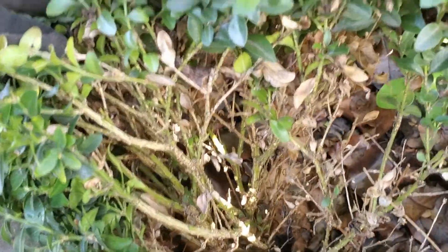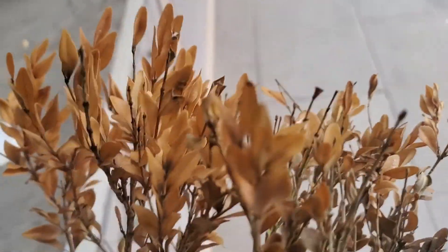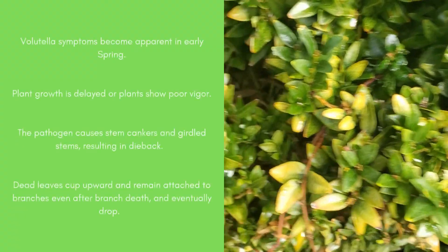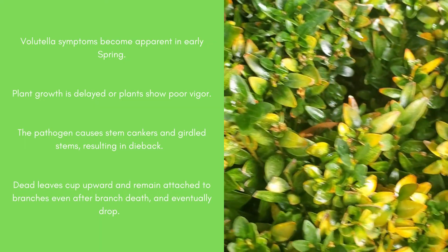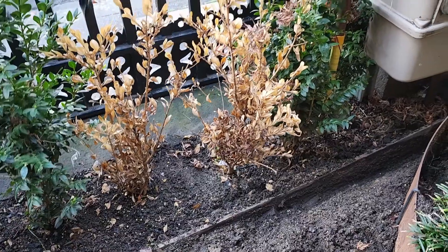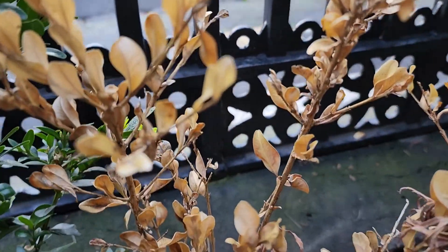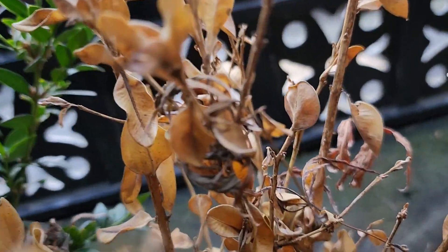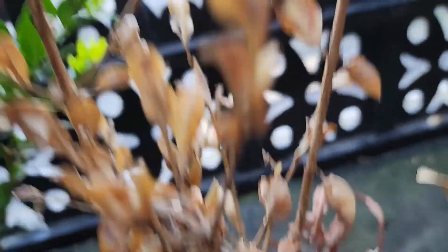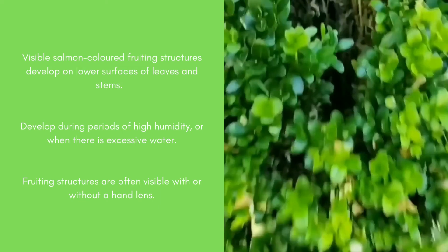Volutella symptoms become apparent in early spring when growth of individual branches is delayed or plants show poor vigour. The Volutella pathogen causes stem cankers which girdle stems and result in dieback. Bark may be loose or discoloured around cankers on infected branches. Leaves of affected branches turn light greeny yellow, change to red or bronze, and finally become straw in colour. Dead leaves cup upwards and remain attached to branches even after branch death, although leaves may eventually drop.